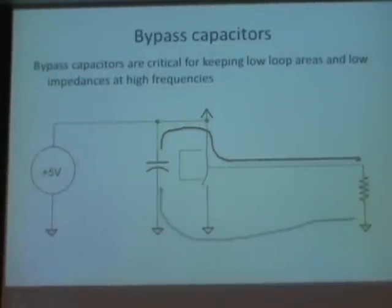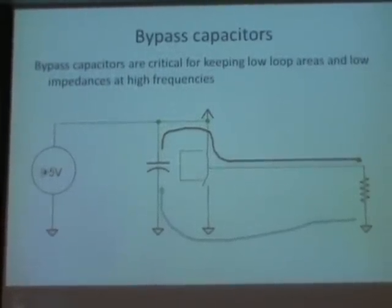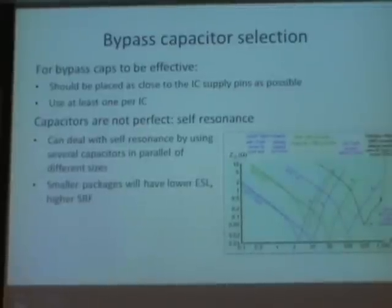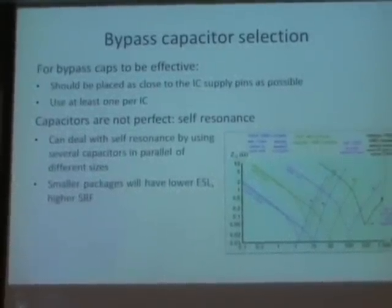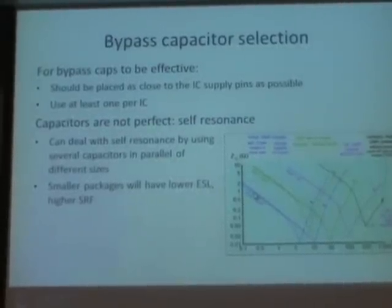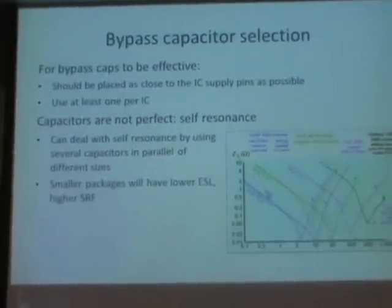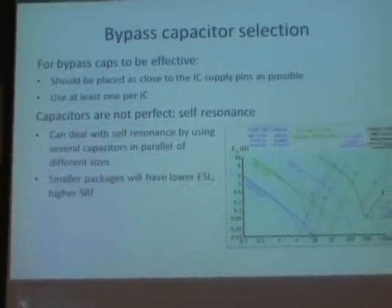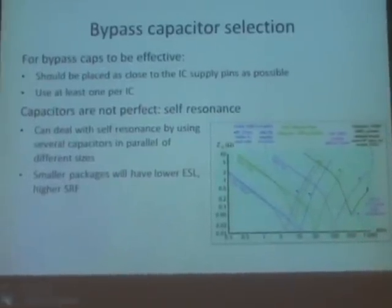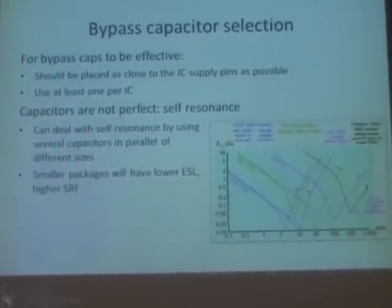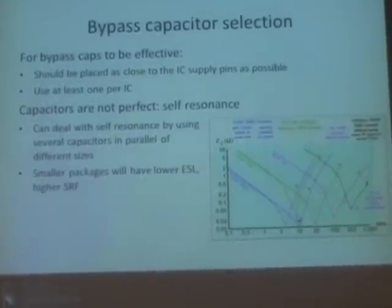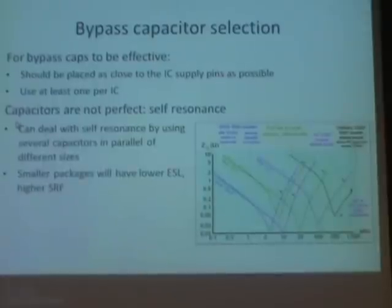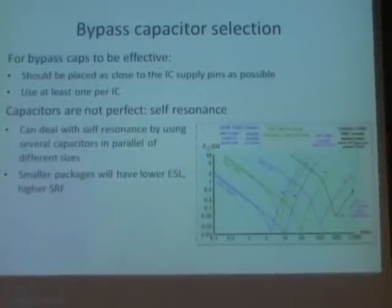By placing the bypass capacitor there, we shorten the loop area dramatically. Usually one voltage supply serves a dozen ICs, so we'll need many unique bypass capacitors to keep these current loops manageable. Bypass capacitors are never perfect — every capacitor has some effective series inductance causing a self-resonant frequency. Looking at impedance vs. frequency plots for various capacitor values, the dip is the self-resonant frequency, below which the capacitor is effective. After that, inductance takes over and impedance rises.